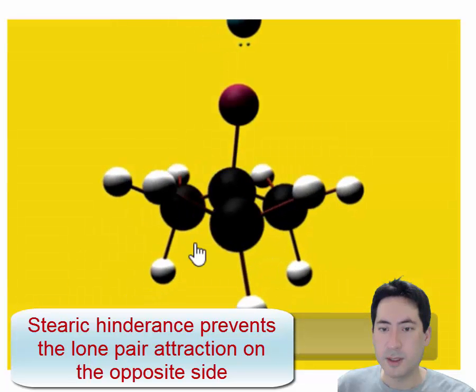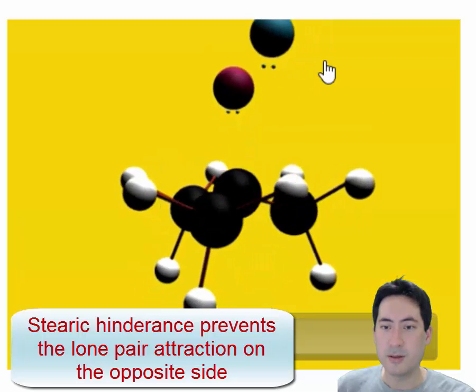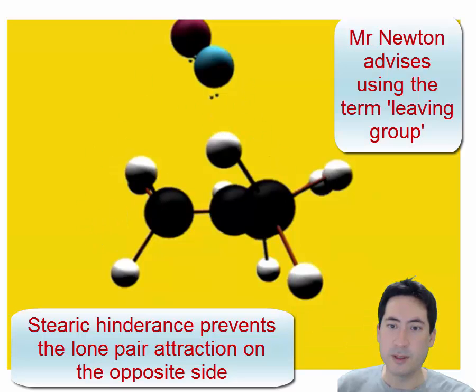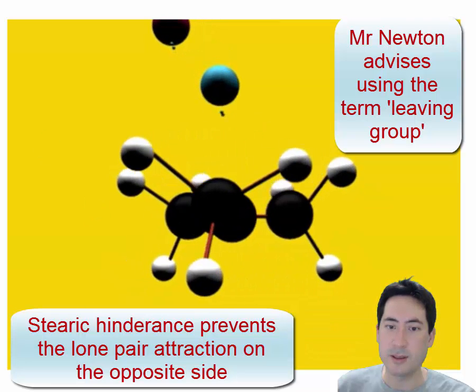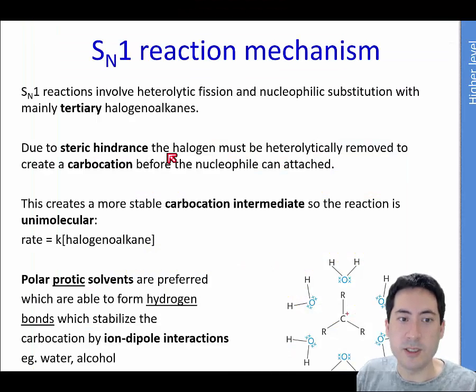You can see from this clip here, the lone pair of electrons. There's no way, like with SN2, to come in from the other side because of the steric hindrance from the methyl groups. What you need to do is wait for the chlorine to pop off. Once that's happened, it takes the lone pair with it, creates a carbocation. That allows the lone pair of electrons from the hydroxyl group to come in and bind. SN1 reactions here.